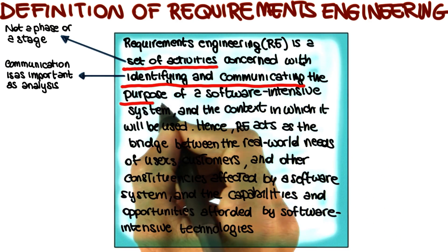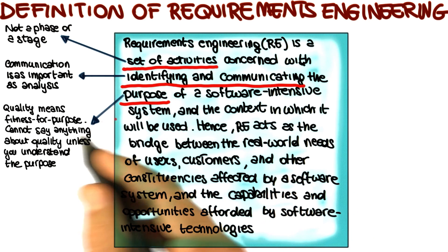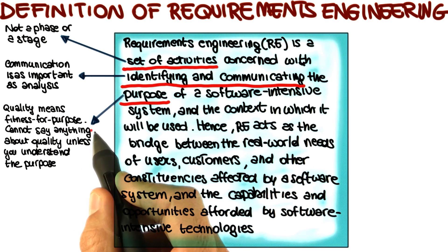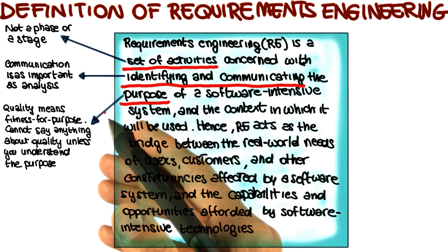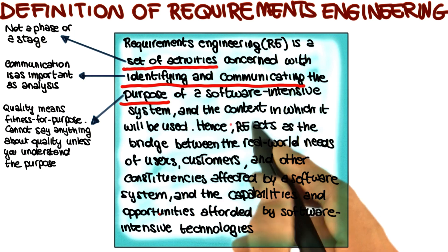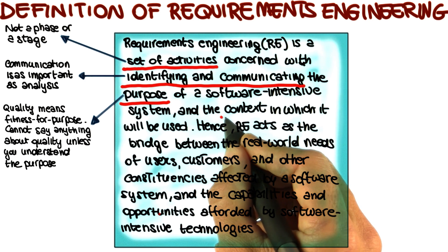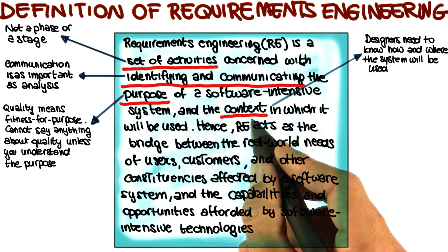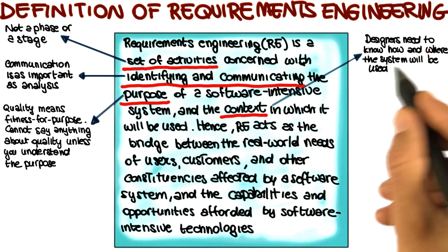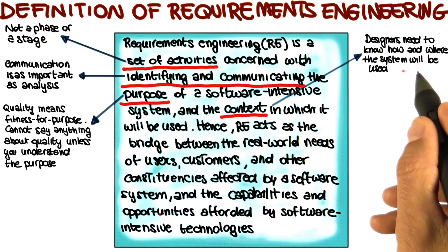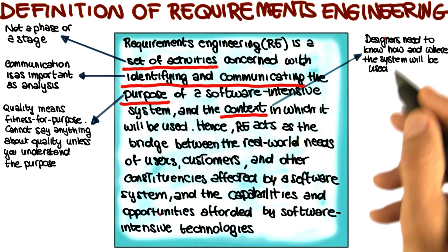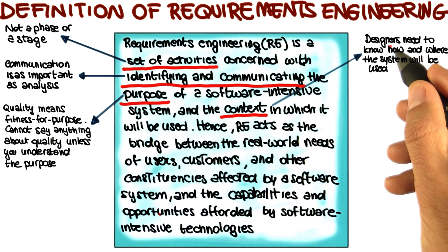It explicitly talks about purpose, so that allows me to stress once more that quality means fitness for purpose. We cannot say anything about quality unless we understand the purpose. The last thing I want to point out in this first part of the definition is the use of the term context. Designers and analysts need to know how and where the system will be used. Without this information, you cannot really understand what the system should do and you cannot really build the system.